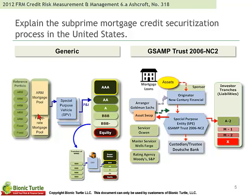In the generic format on the left-hand side, we have a pool of credit-sensitive assets. Notice that securitization — we can talk about pros and cons — but there's clearly a diversification benefit to pooling these credit-sensitive assets. In a cash securitization, these are sold to the special purpose vehicle in a true sale. How does a special purpose vehicle purchase those assets? By issuing credit-linked notes to the investors.